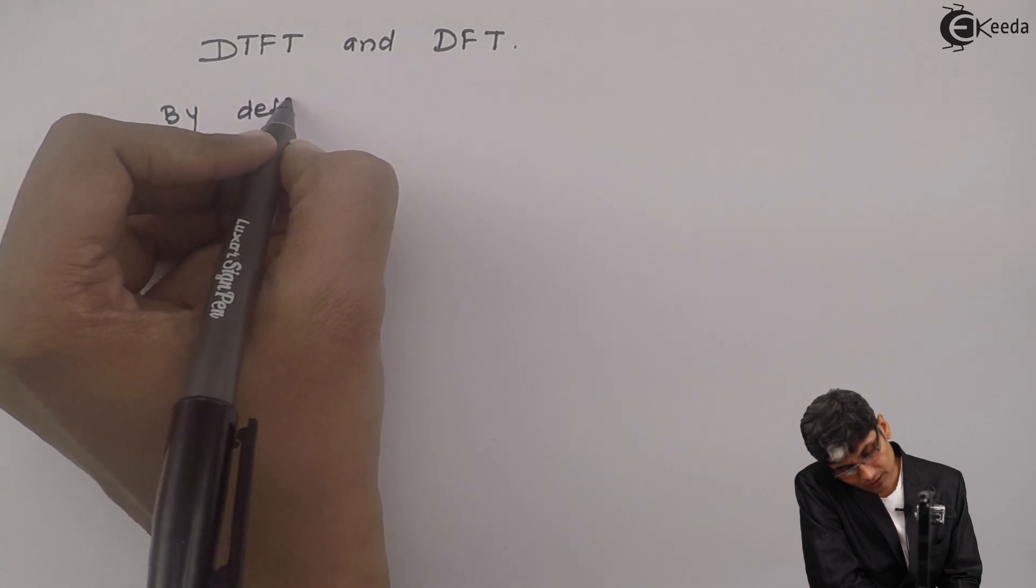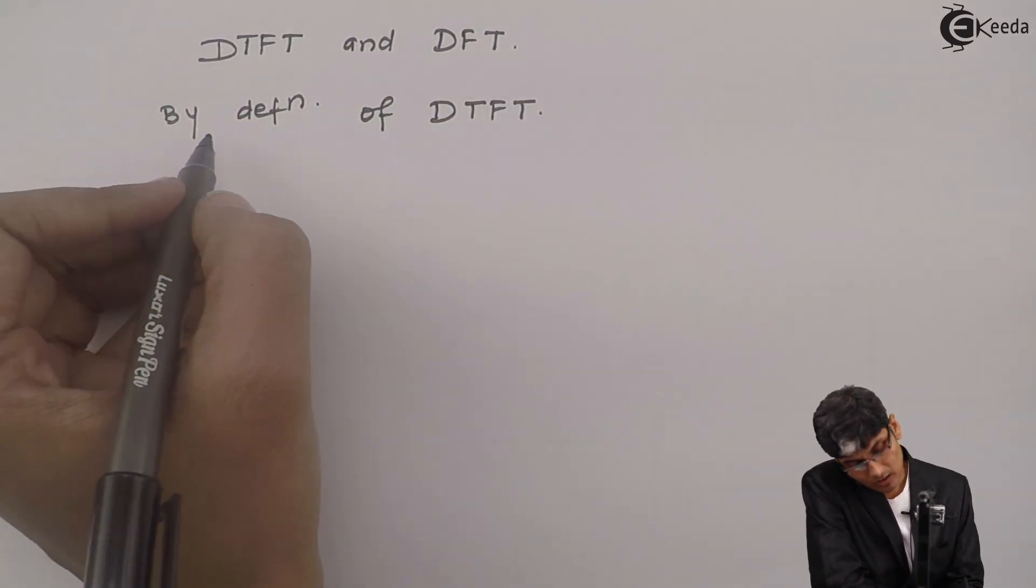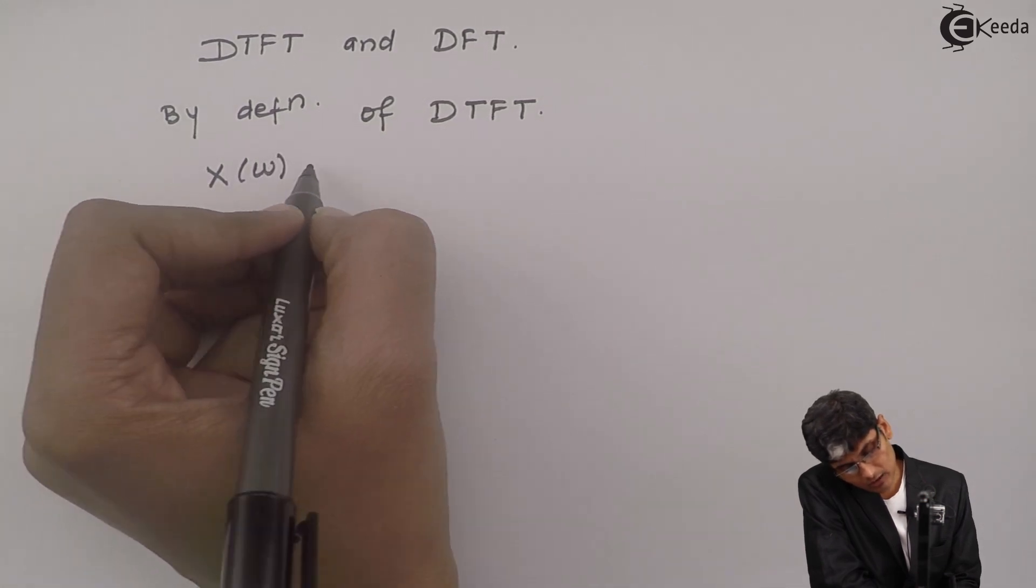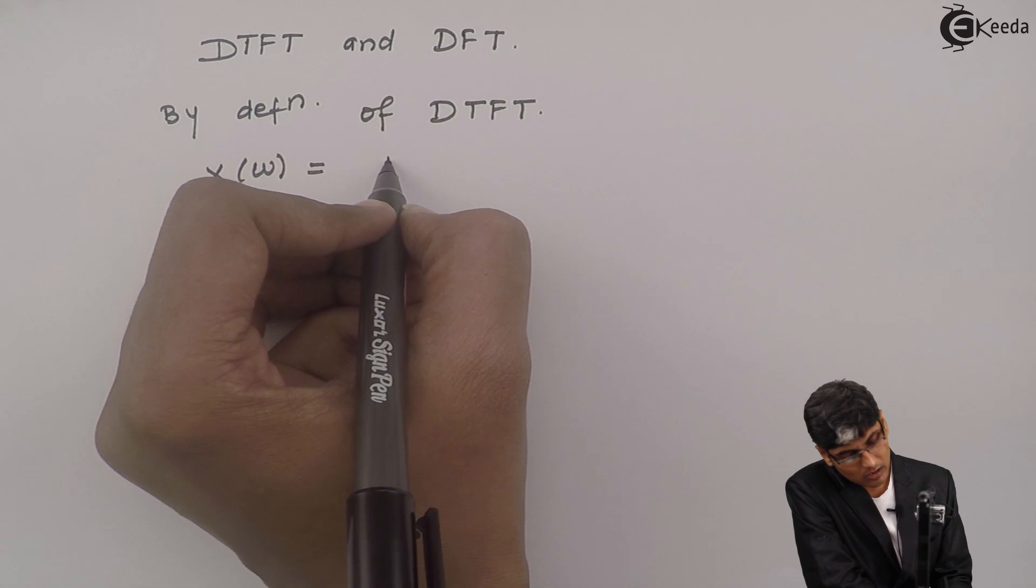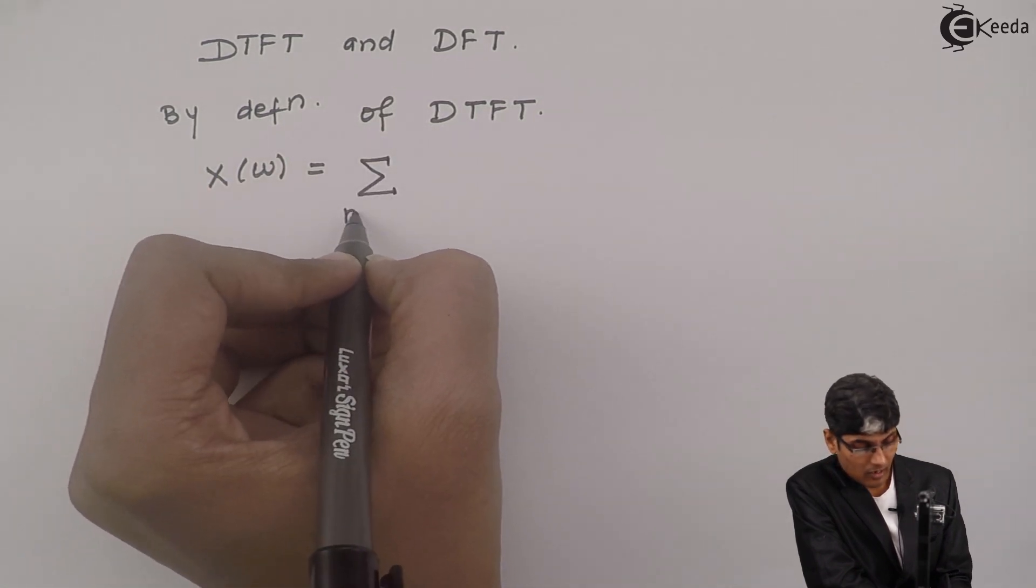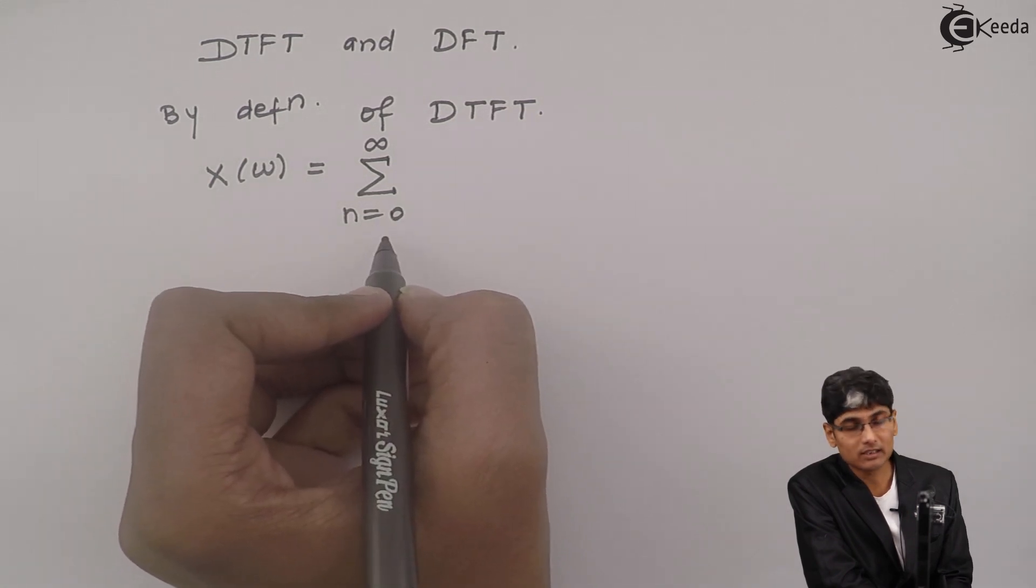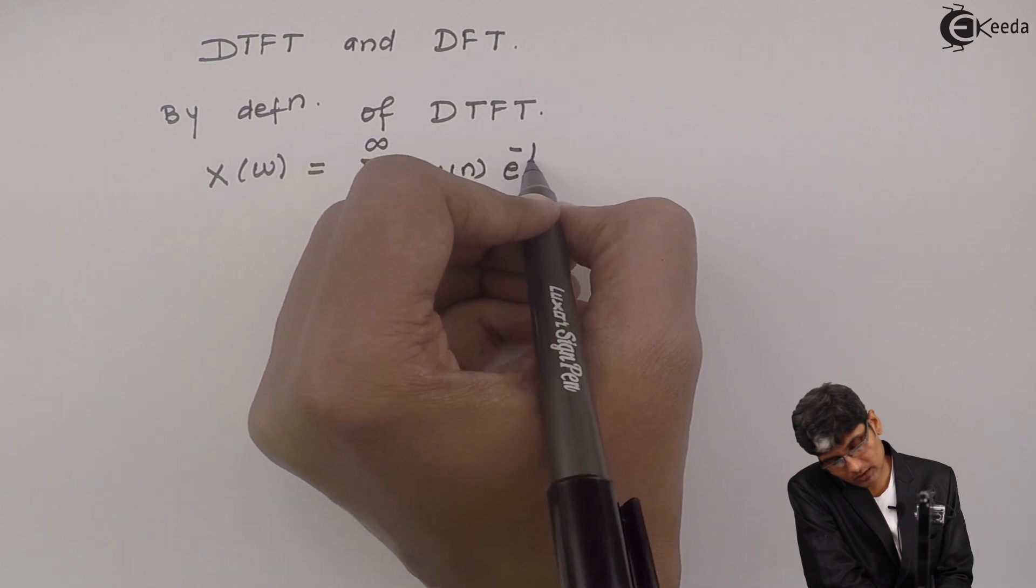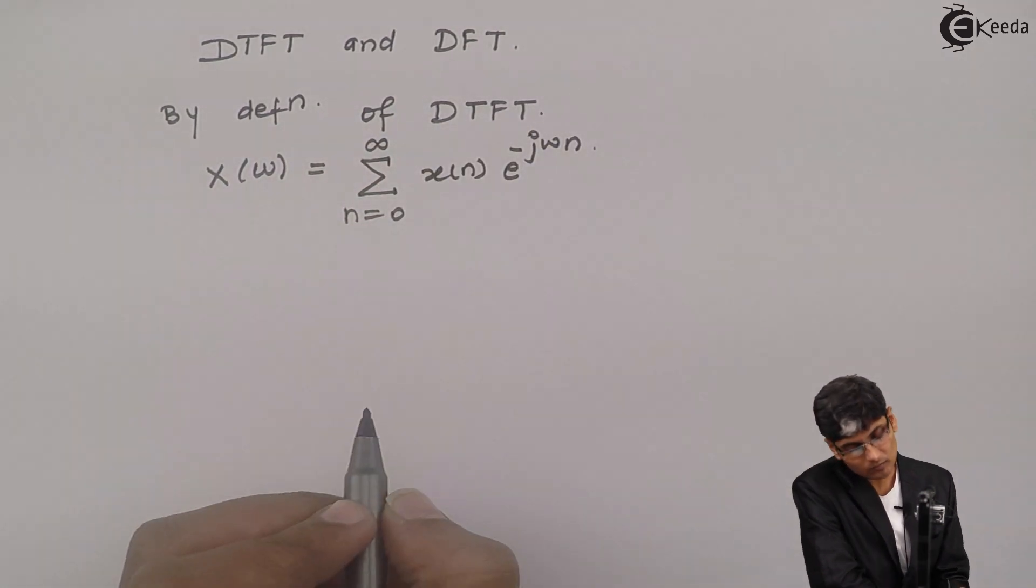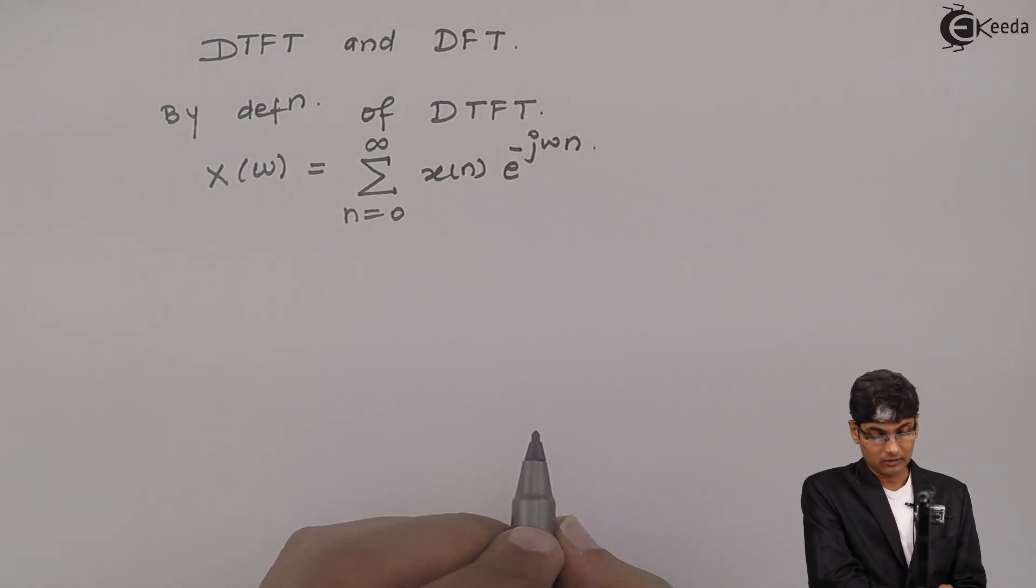By definition of DTFT, x(ω) or x(e^(jω)) equals summation n going from 0 to infinity, x(n)e^(-jωn). This is my definition of DTFT.